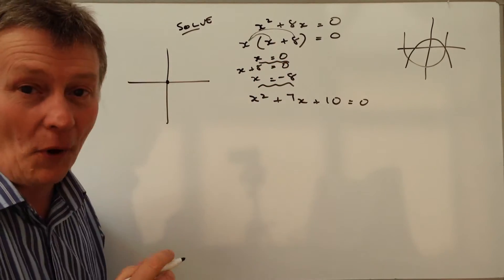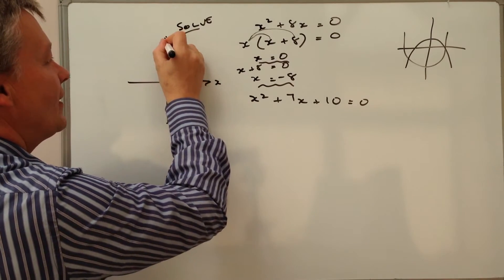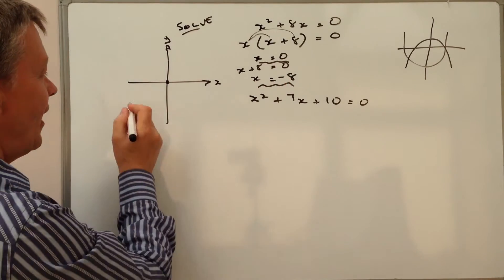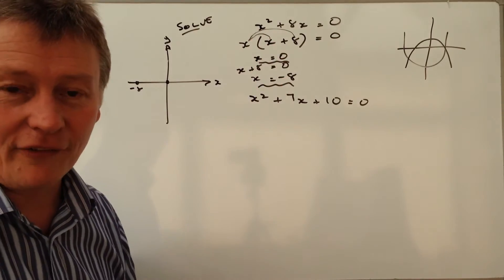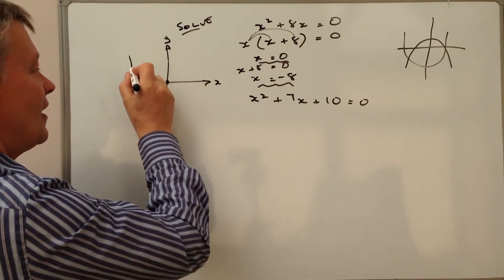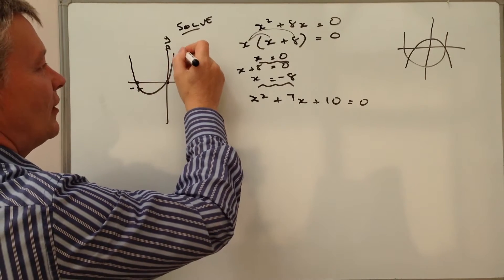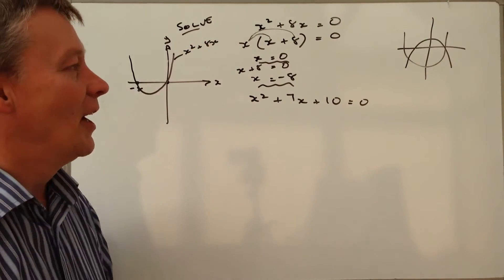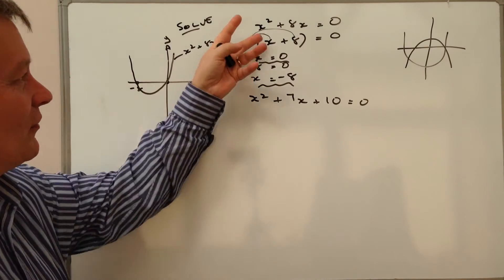Let's look at that on a graph. X is zero is this point here at the origin where this is the x and this is the y axis. X is also minus eight, which is going to be down here somewhere. If I was plotting this graph, I would expect it to cross the x axis at those two points. This particular graph would be x squared plus 8x.